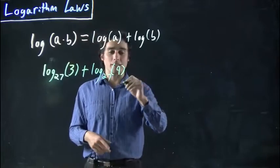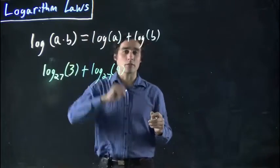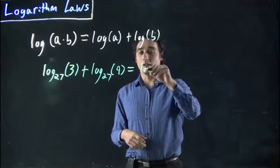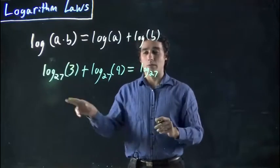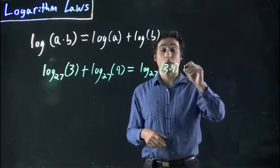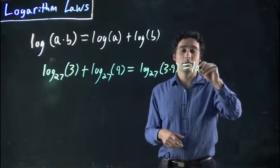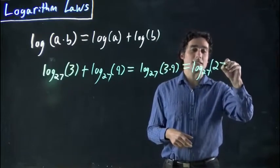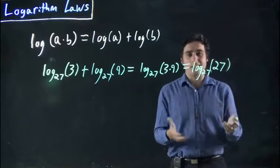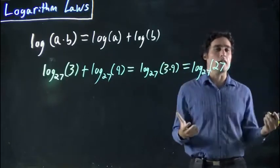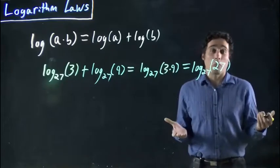So I've log to the base 27 of 3 plus log to the base 27 of 9. Since they're the same base, I can use my product rule. Because I can rewrite this then as log still to the base 27. Remember, the base stays the same. And now this is the same as 3 times 9. Why is that useful? Because log to the 27 of 27. Now remember, we looked at that in the intro video. 27 to the power of what equals 27? 1.